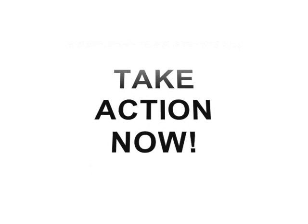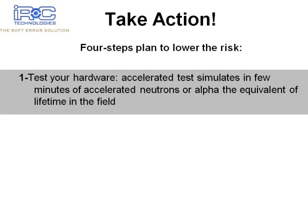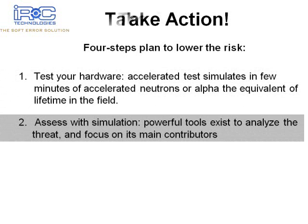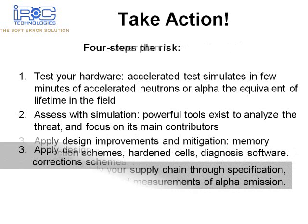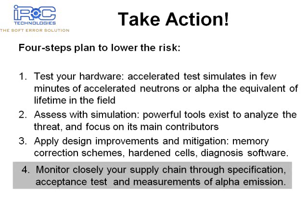Here is a four-step plan to address the issue. Step 1: Have your hardware tested. Accelerated neutron and alpha-particle tests allow you to simulate a lifetime in the field in just a few minutes. Step 2: Understand how and why soft errors happen in your design by using simulation tools. Step 3: Make design improvements — memory correction schemes, hardened cells, diagnostic software. Step 4: Monitor your supply chain closely. Implement a testing qualification program, and ask them to use only low and ultra-low alpha materials.